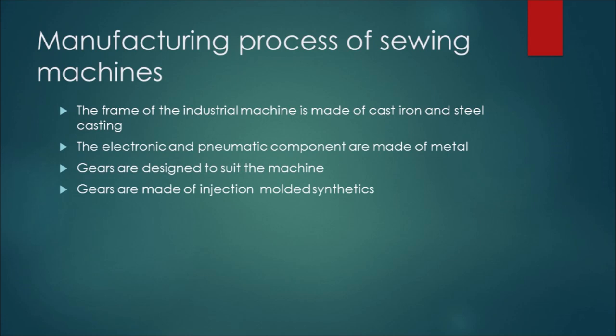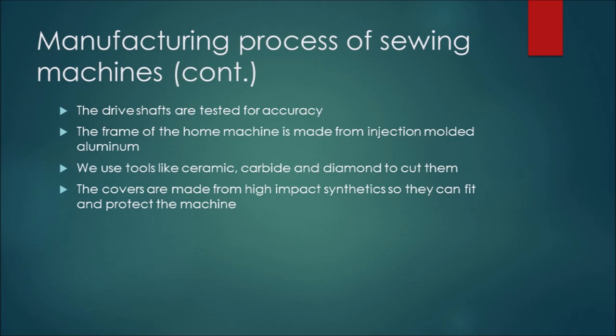The electronic and pneumatic components are made from metal, not plastic, to protect the machine. Gears are designed to suit the machine. These gears are made of injection molded synthetics. The manufacturer makes drive shafts and tests them for accuracy. They are made of metal and alloys. They are made with abrasive feet, then add grooves, bevels, and holes for particular sewing processes.